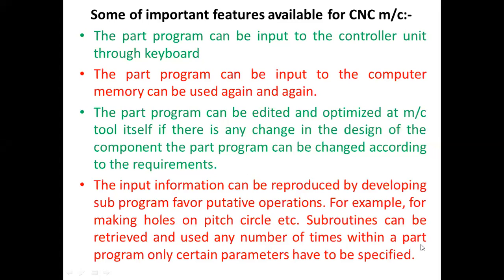Subroutines can be retrieved and used any number of times within a part program; only certain parameters need to be specified. This means we can easily change parameters such as cutting speed, feed rate, spindle speed, and coolant on or off. You simply call the program with small changes and it can be used.